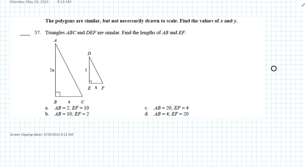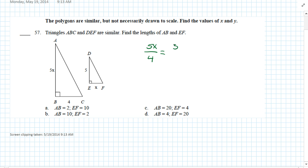Question 57: The polygons are similar but not necessarily drawn to scale. We know AB is similar to DE and BC is similar to EF. We write the ratio as long side to short side equals long side to short side. Now we cross multiply and get 5x squared equals 20. Divide each side by 5.